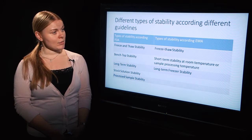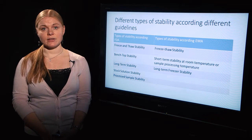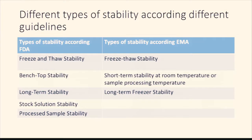According to EMA, stability of analyte is evaluated using both low and high-level quality control samples. The investigation of stability should cover short-term stability at room temperature or sample processing temperature, freeze and thaw stability, and long-term freezer stability. The emphasis in the EMA guide is not as much on the intrinsic stability of the analyte as its stability in specific matrices.